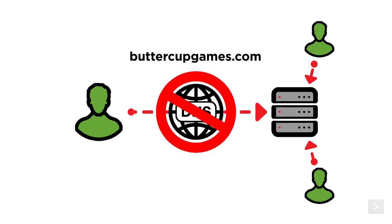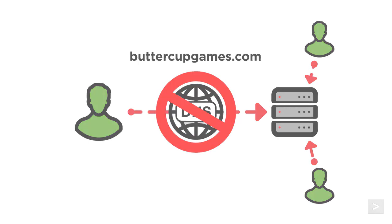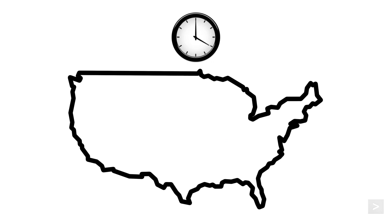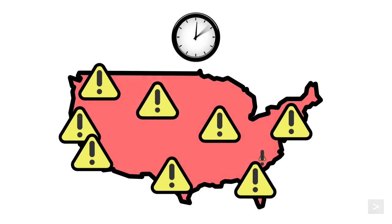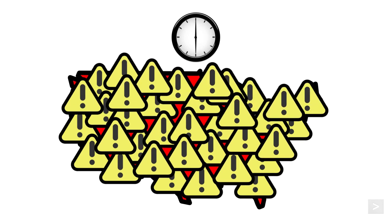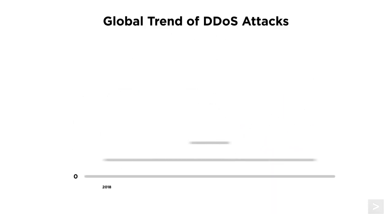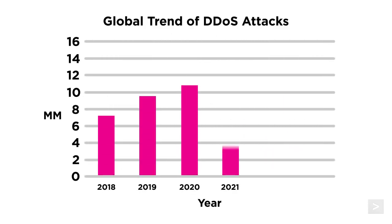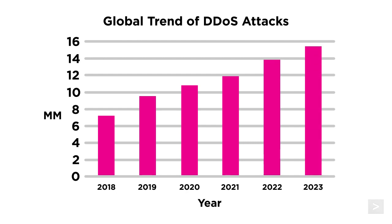At least three waves of attacks were launched against Dyn's DNS services, lasting from early morning to end of business day US Eastern time on a Friday, affecting DNS responses and making many major websites unavailable for users across North America and Europe — giving many of us the feeling that the internet was down.